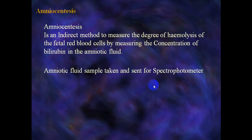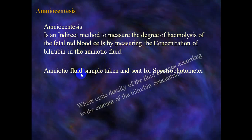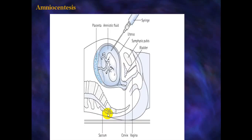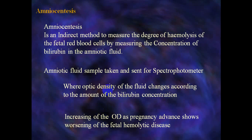Amniocentesis is an indirect method to measure the degree of hemolysis of fetal RBCs by measuring the concentration of bilirubin in the amniotic fluid. An amniotic fluid sample is taken and sent for spectrophotometry, where the optical density of the fluid changes according to the amount of bilirubin concentration. An increase in optical density as pregnancy advances indicates worsening of fetal hemolytic disease.